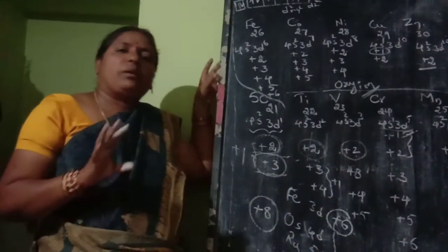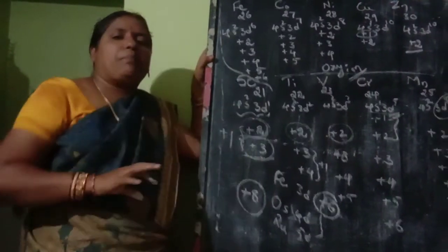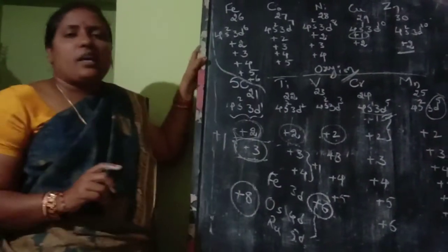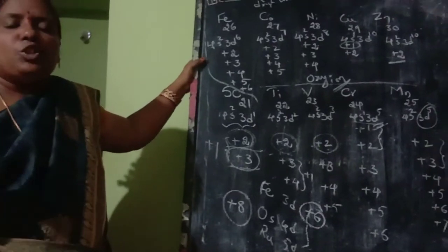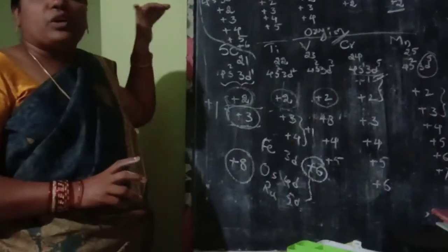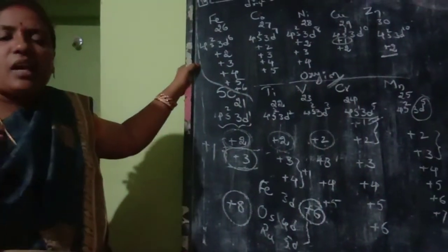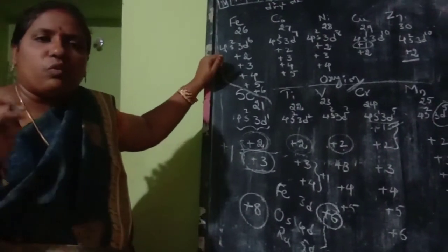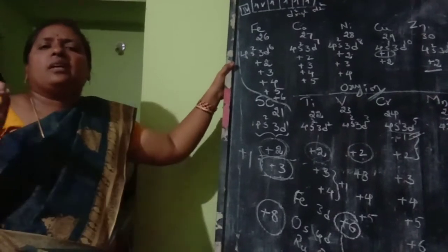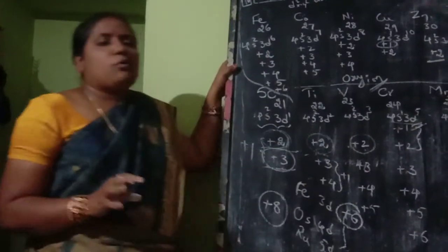In the first class, we discussed the syllabus. The third paper is inorganic chemistry, with the first two units being inorganic and the remaining three being organic chemistry. Unit 1 of the first chapter is D-Block elements.